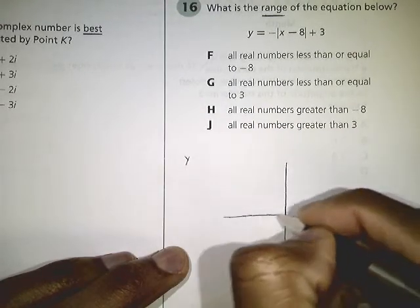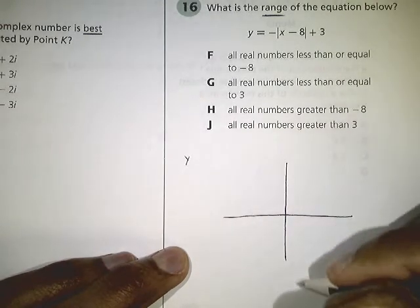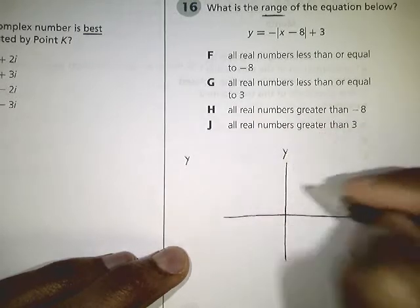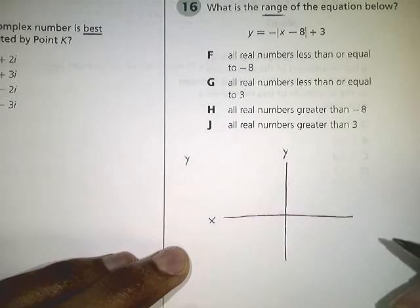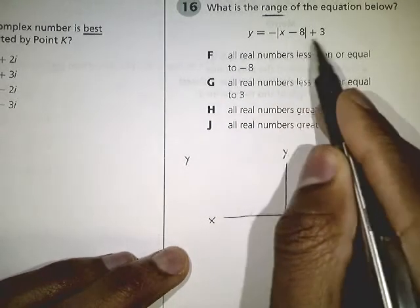Because again, our y-value is our range and our domain is going to be our x-value left and right, but we don't really care about that. It asks us to graph what this equation looks like so we can figure out what the values are going to be.